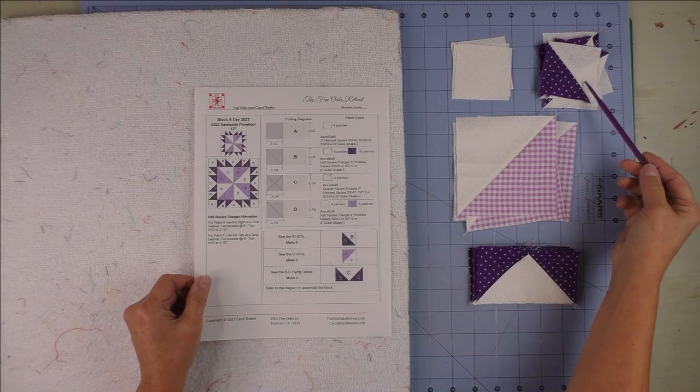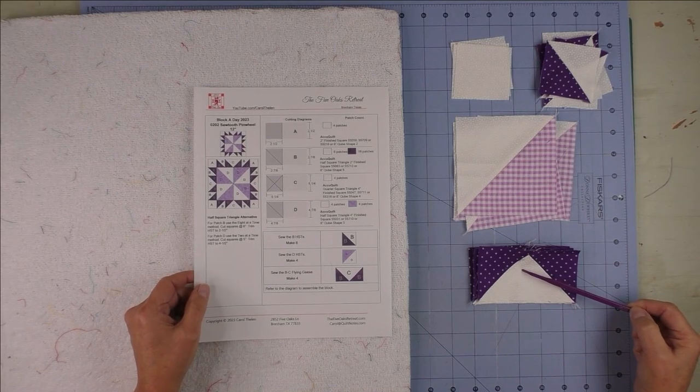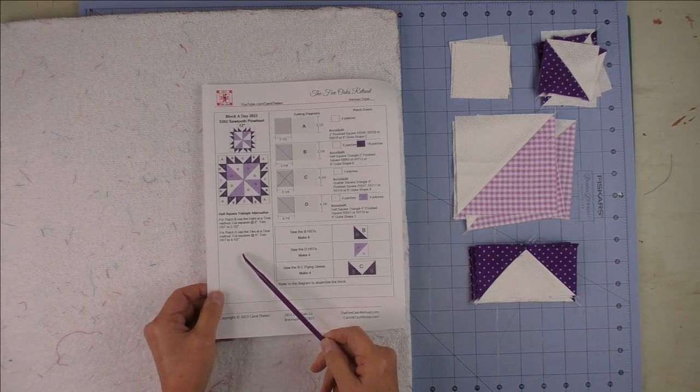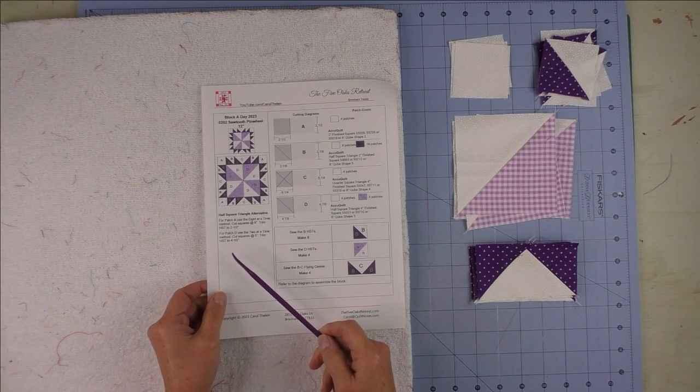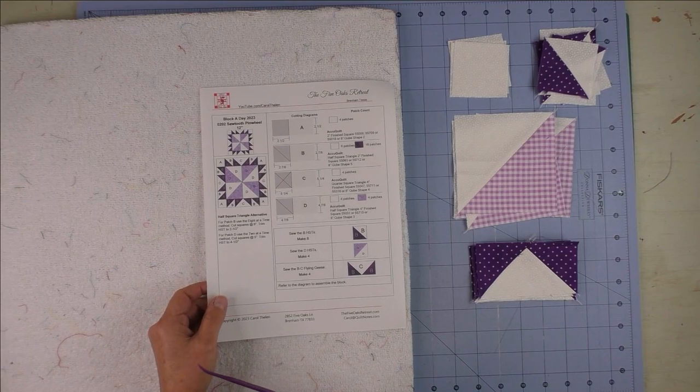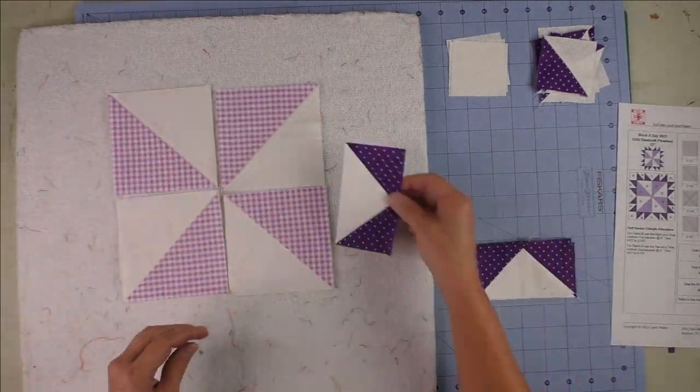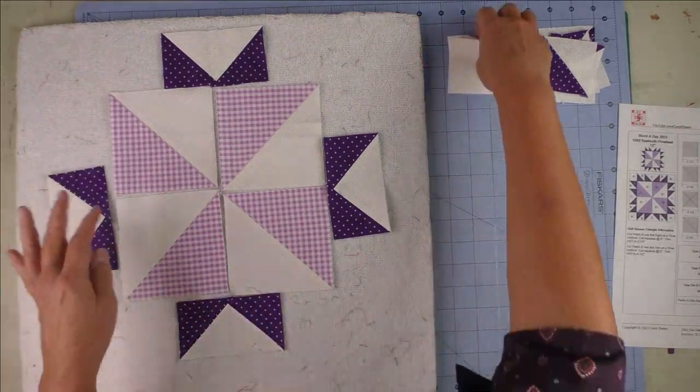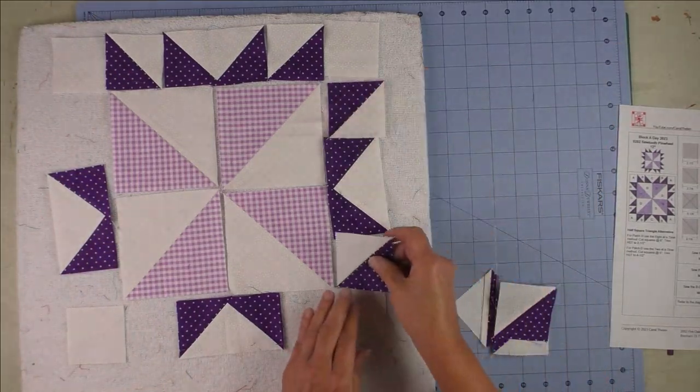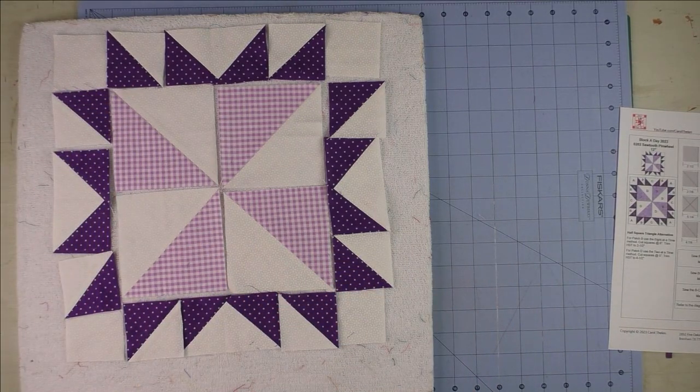Here are the units that we pieced: the small half square triangles, the large half square triangles, and the flying geese units. For the flying geese, there's also an alternative method and I will add it here on your copy. It's the flying geese four at a time, and that's how many you need for this block. I will add that in this copy that is published.